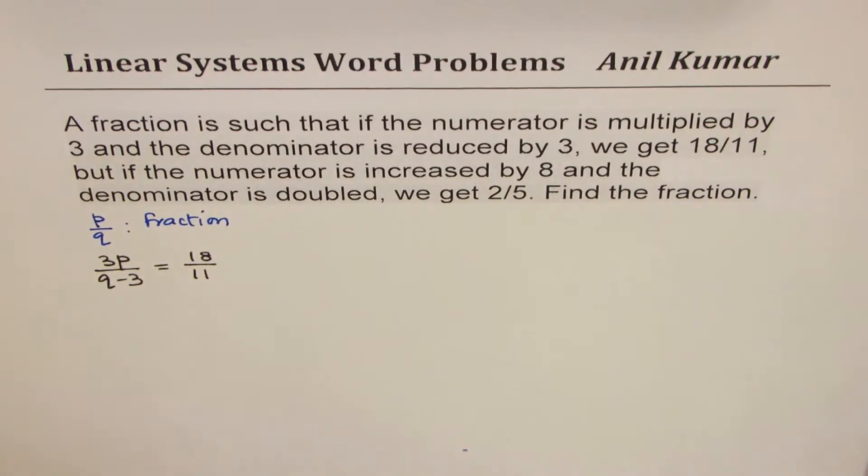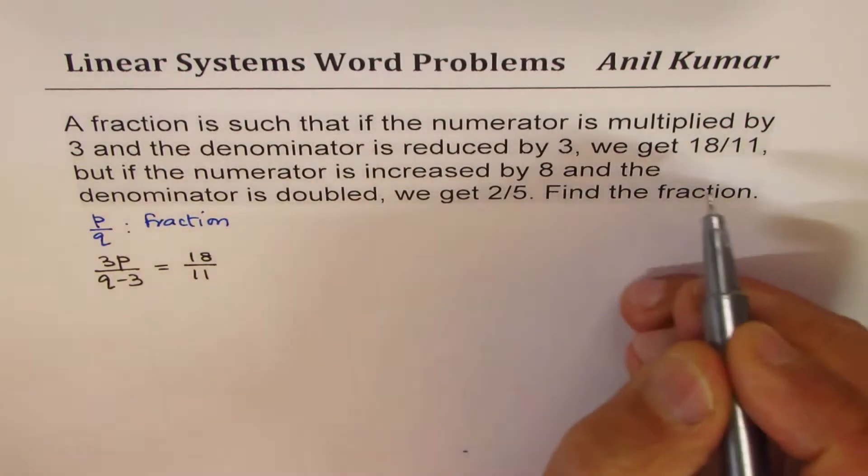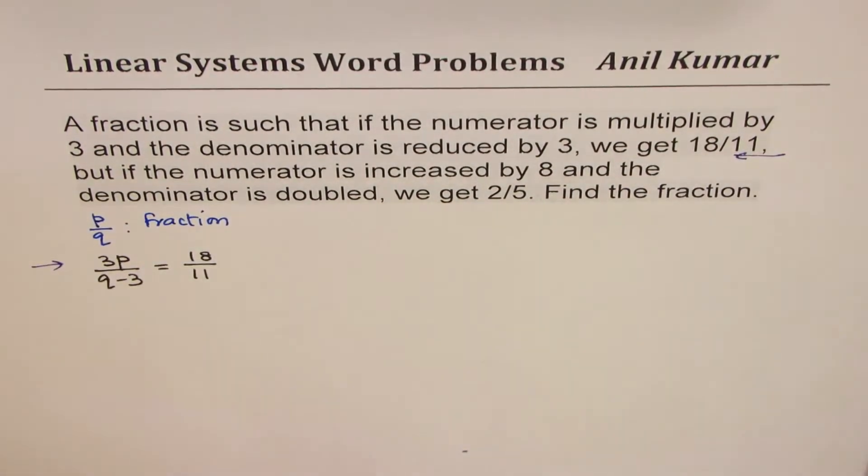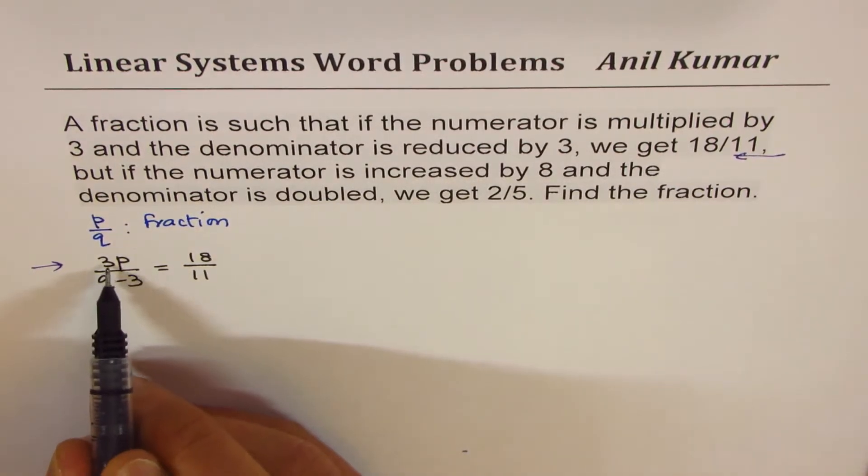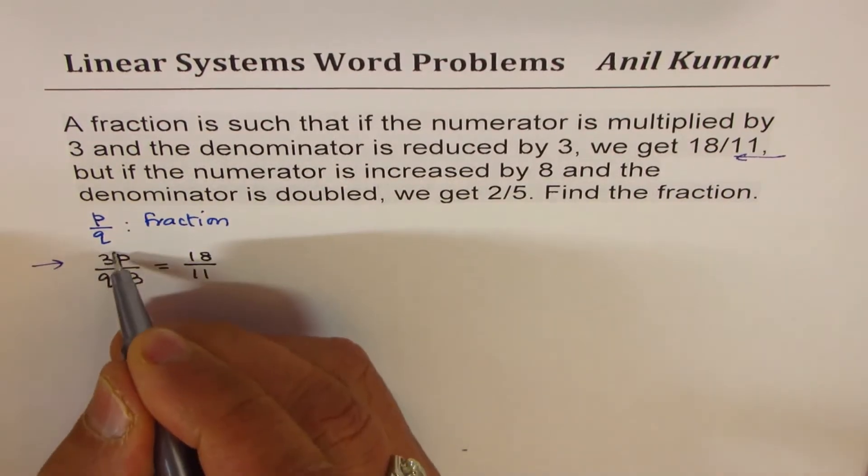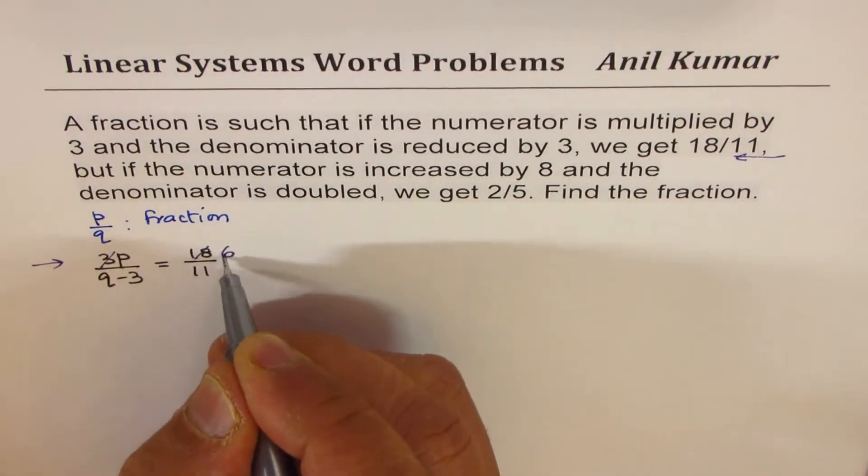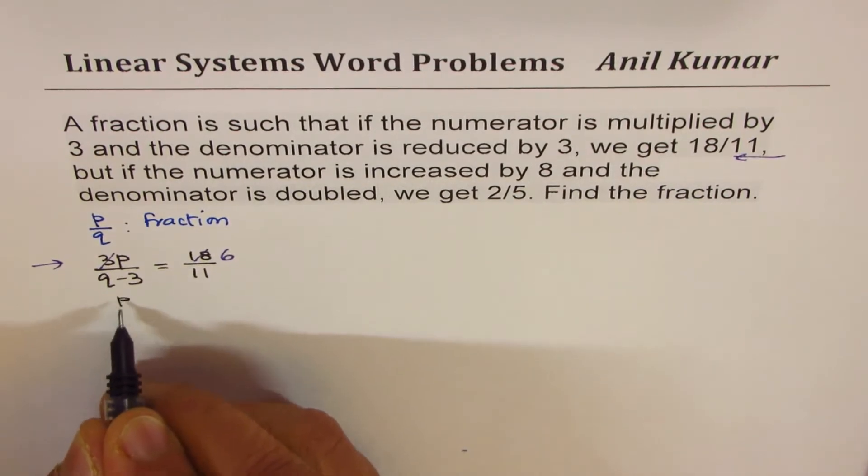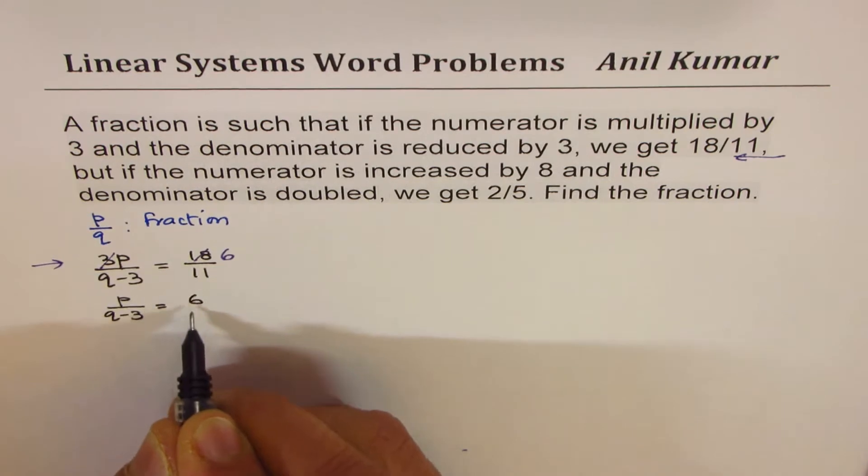Do you see that equation? So a simple equation is formed and what we have done here is read up to this place and got our equation. Let's simplify this equation. So you can see 3 and 18. We could actually simplify this. That goes 6 times. So I could write this as p over q minus 3 equals to 6 over 11.